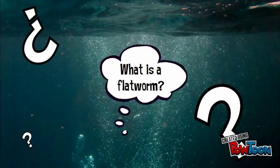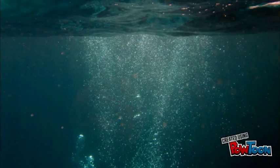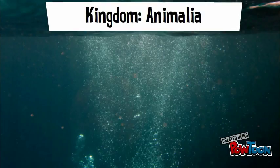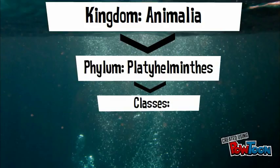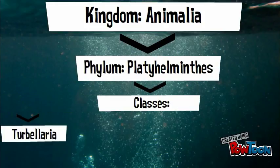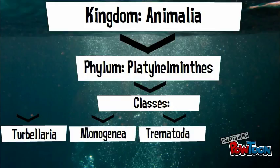What is a flatworm? A flatworm is a living organism that falls under the kingdom Animalia, the phylum platyhelminthes, and the classes Turbellaria, Monogenea, Trematoda, and Cestoidea.